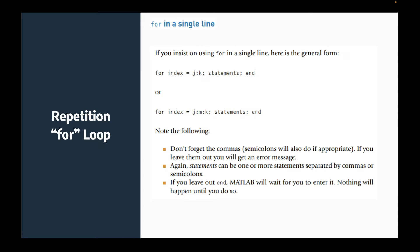There are also inline single-line loops. If you want to write a for loop without going to the next line, you can do it in one line: for index i equals j to k, then semicolon. Semicolon represents hitting enter. You can continue writing your statement and end the for loop all on one line.